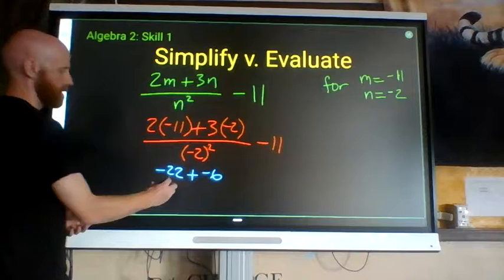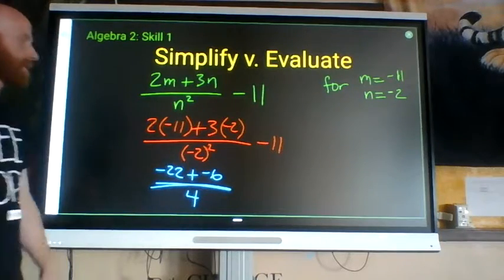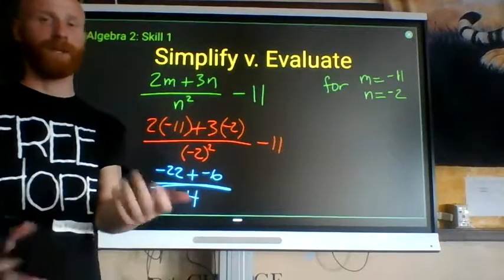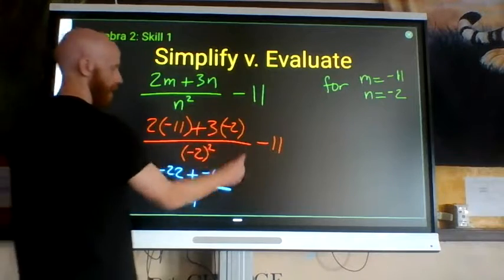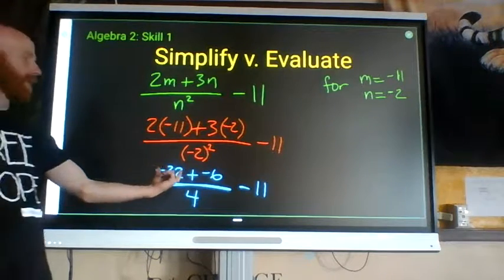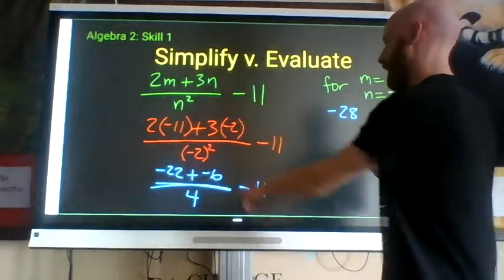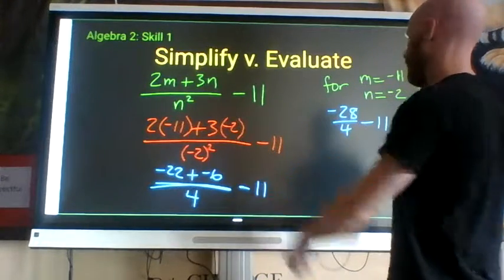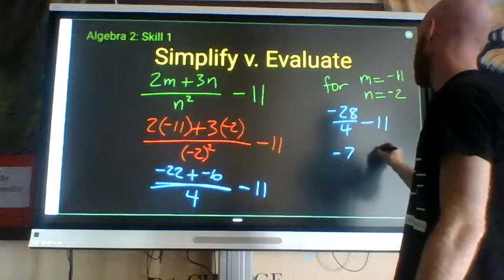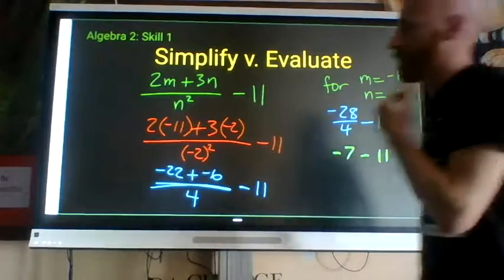Simplify the denominator: negative 2 times negative 2 is positive 4. The minus 11 hasn't been dealt with yet. Complete the numerator: negative 22 plus negative 6 is negative 28. So we have negative 28 divided by 4, then subtract 11. Negative 28 divided by 4 is negative 7. Then negative 7 minus 11 is negative 18.